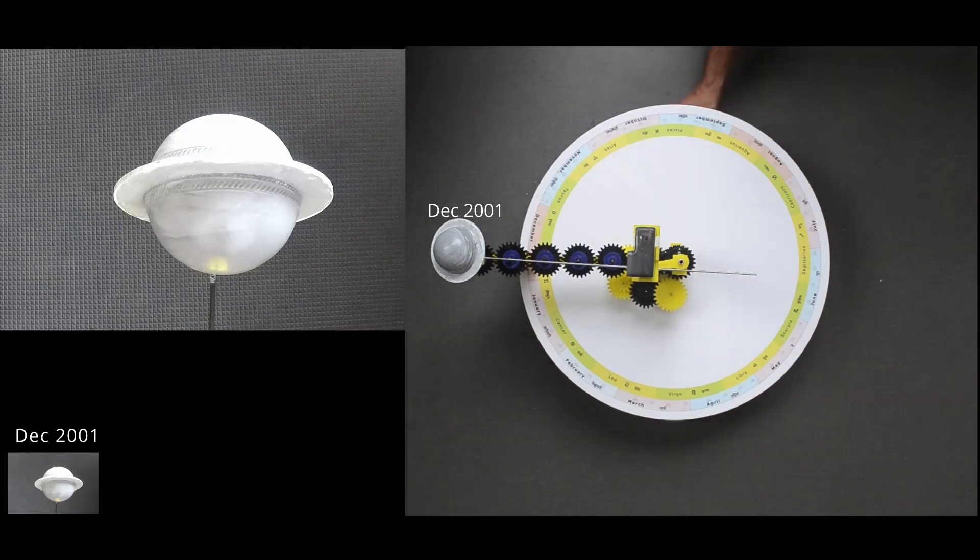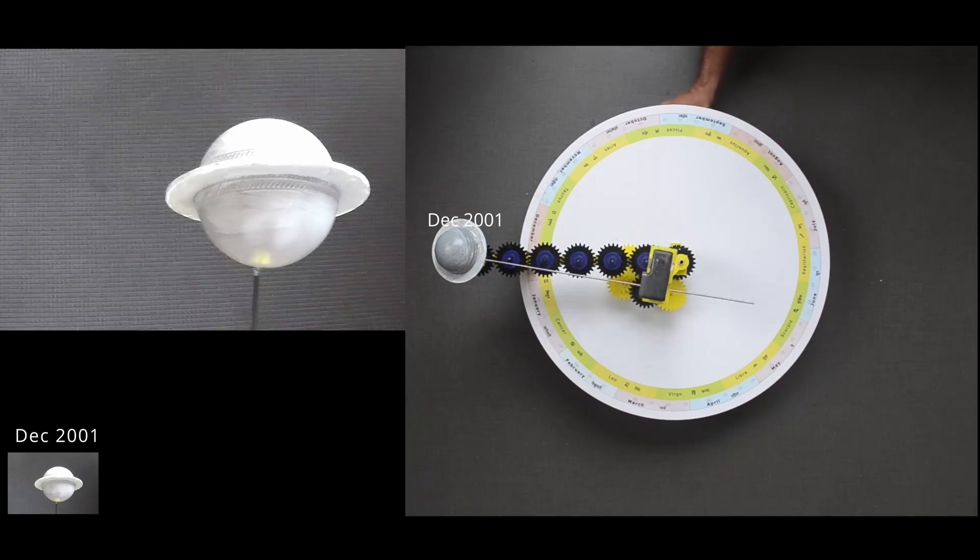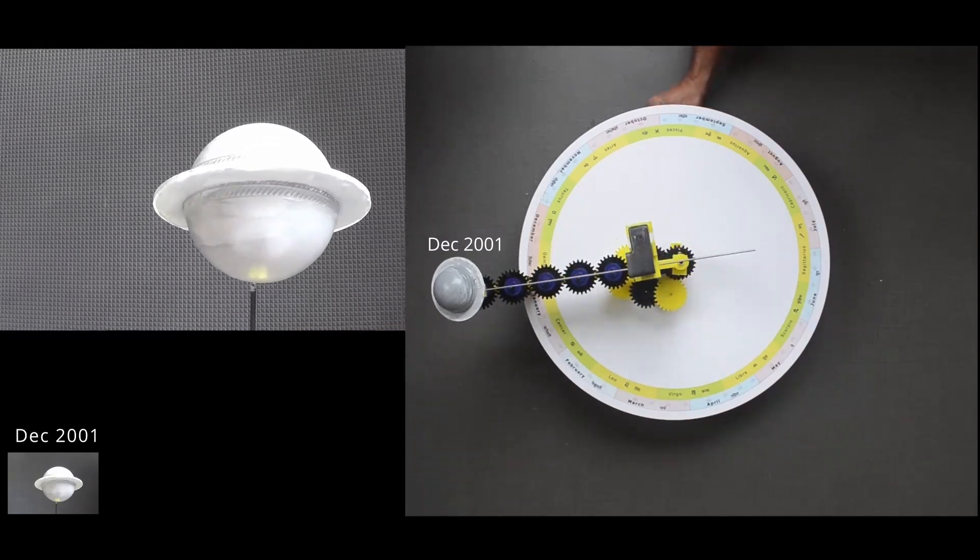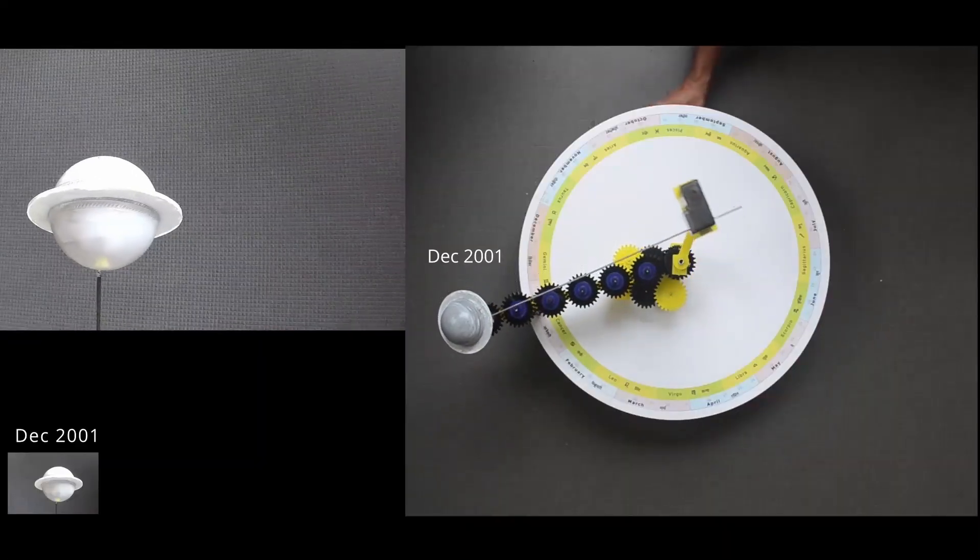As Saturn is tilted away from the Sun as well as Earth, we see rings and the planets from below. That is, Southern Hemisphere is clearly visible.